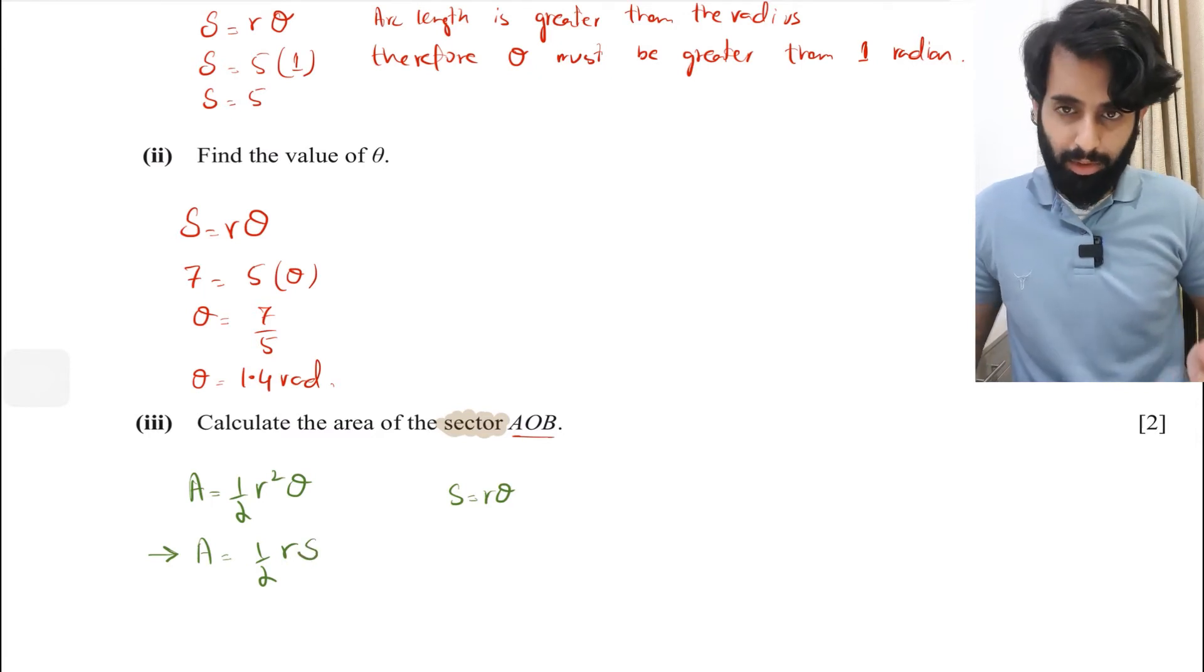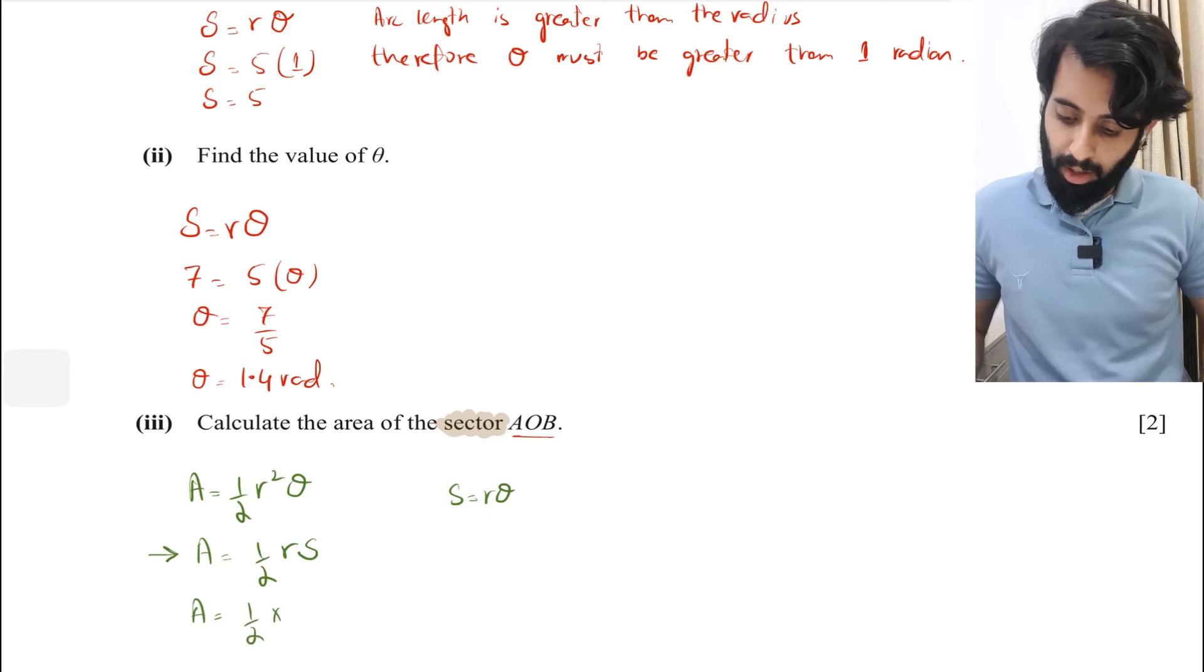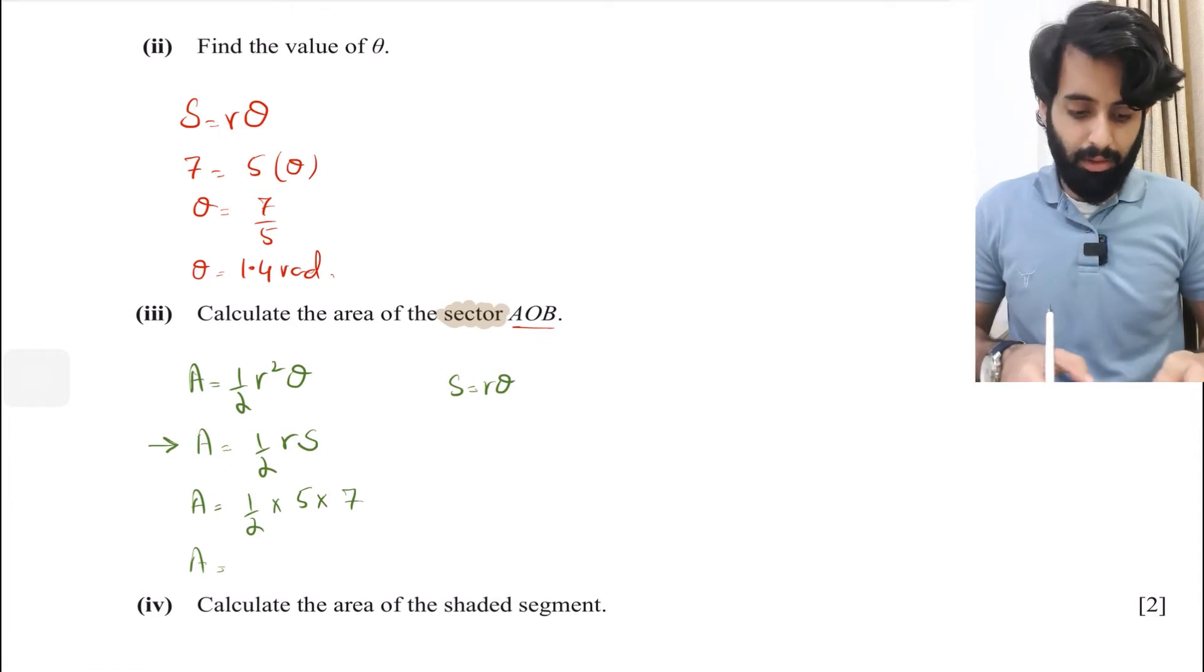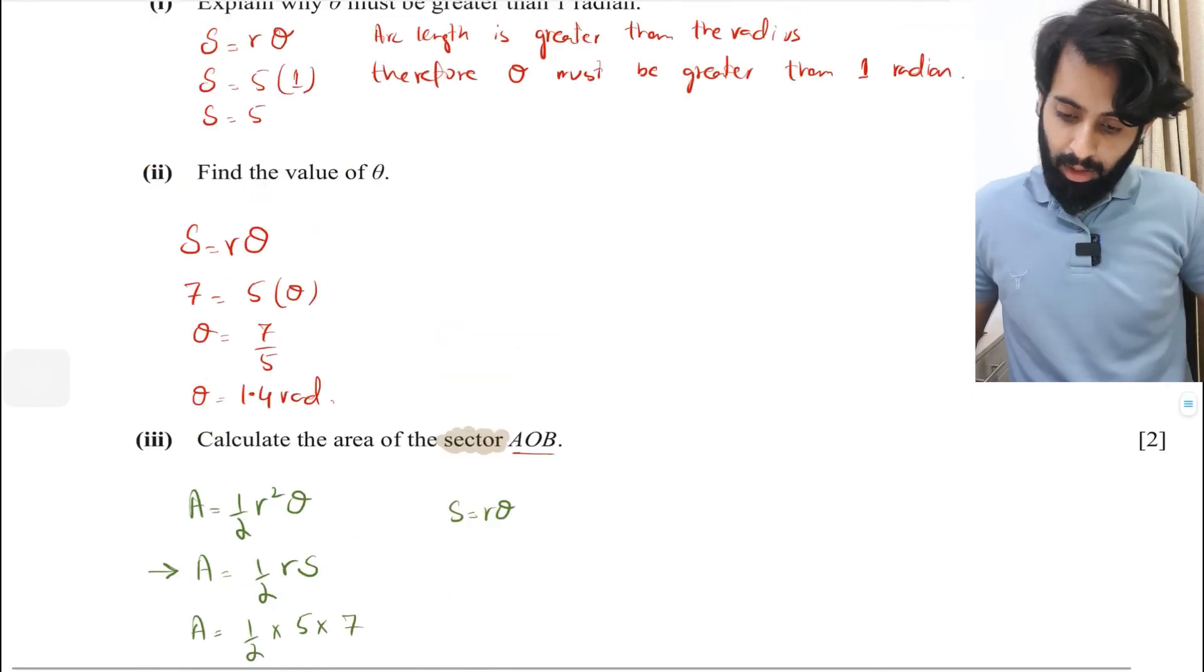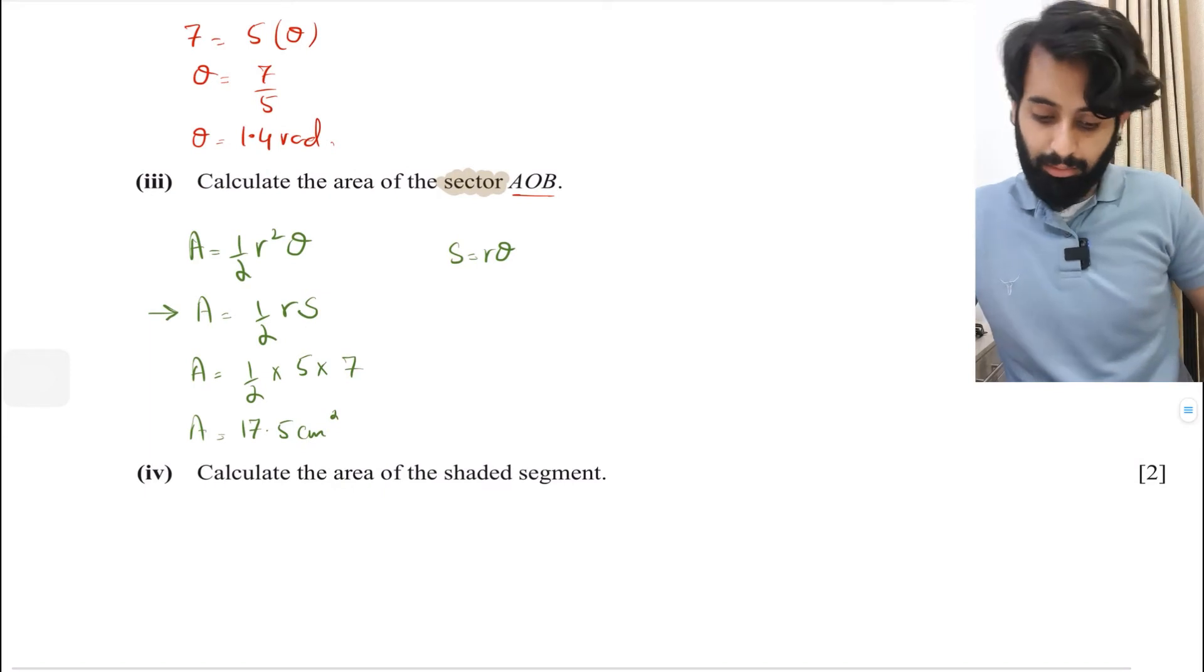It's going to be half times 5 times 7. Five times seven is 35, 35 divided by 2 is 17.5. So 17.5 cm².